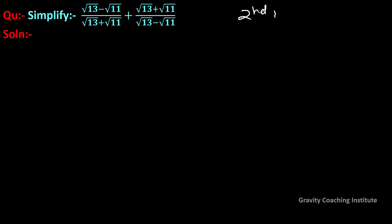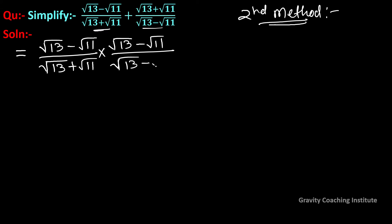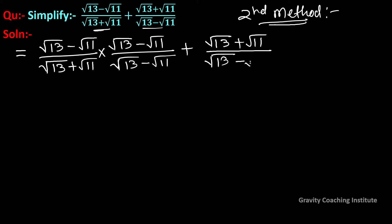Second method: We rationalize each term separately. First term: (√13 - √11)/(√13 + √11) multiplied by (√13 - √11)/(√13 - √11). Second term: (√13 + √11)/(√13 - √11) multiplied by (√13 + √11)/(√13 + √11).